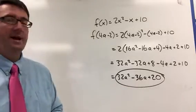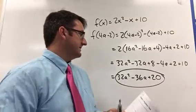So that's our answer. 32a squared minus 36a plus 20.